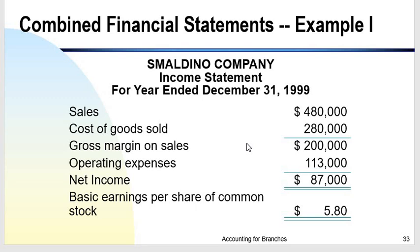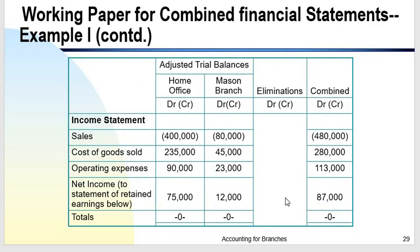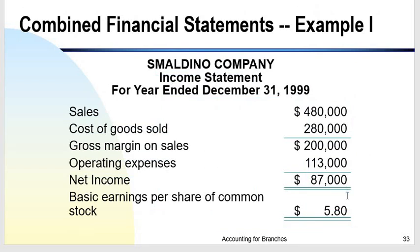The combined financial statements show: sales, cost of goods sold, gross margin of $200,000, operating expenses of $200,000, and net income of $87,000. This matches the combined portion of our working paper — the combined net income is $87,000.